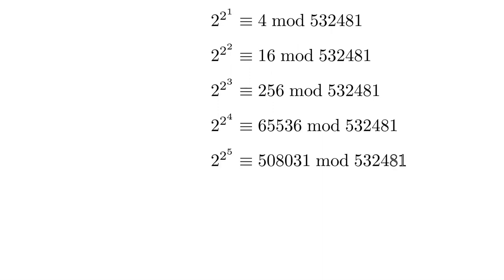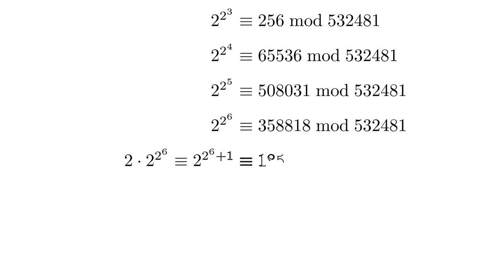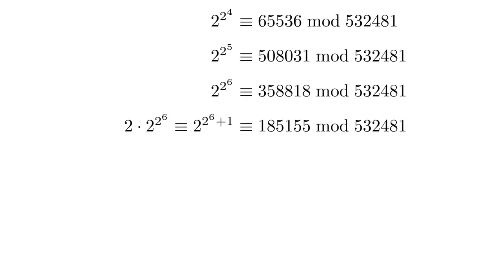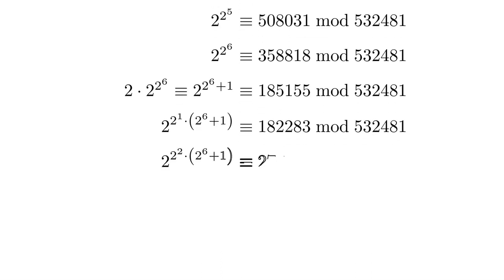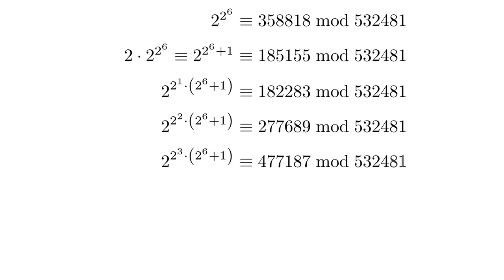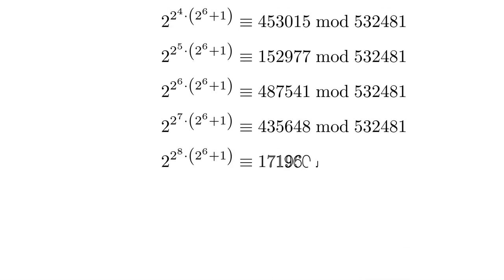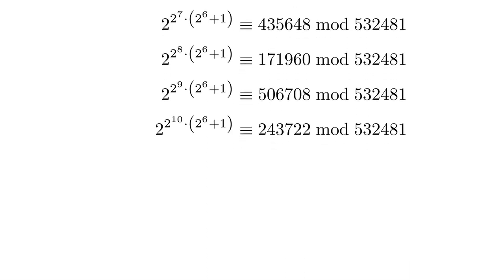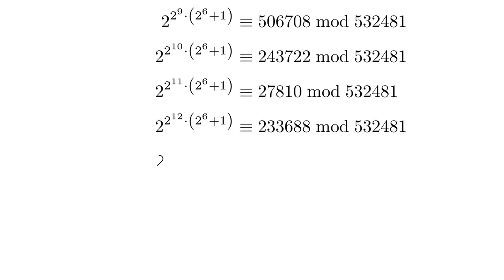So here I've got 2 to the 2 to the 6th, and if I just multiply that by 2, that's an easy way to compute 2 to the power 2 to the 6 plus 1. And then I'll square that to get 2 times 2 to the 6 plus 1, and I'll keep on squaring that, and I'll keep on squaring that.